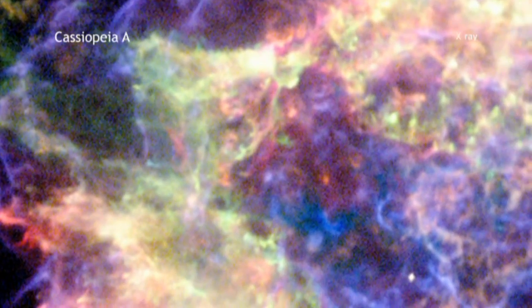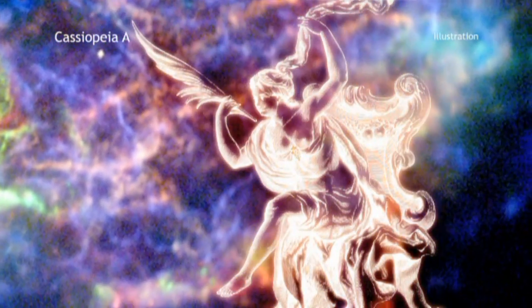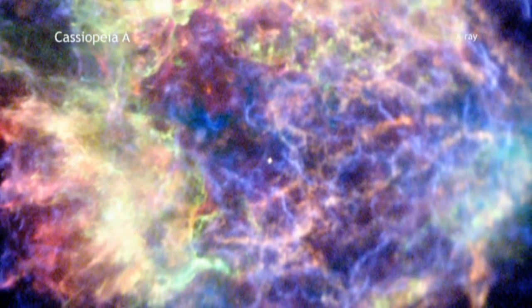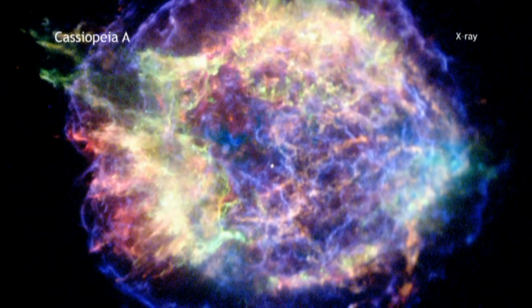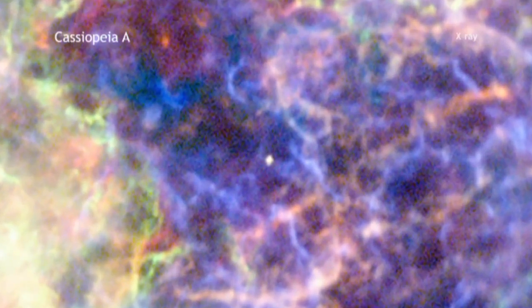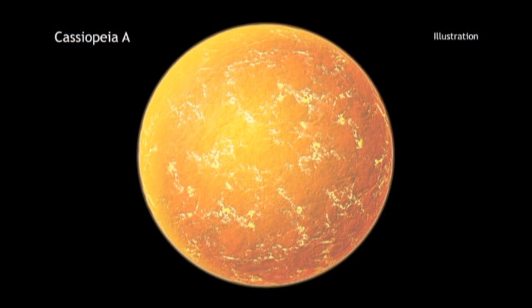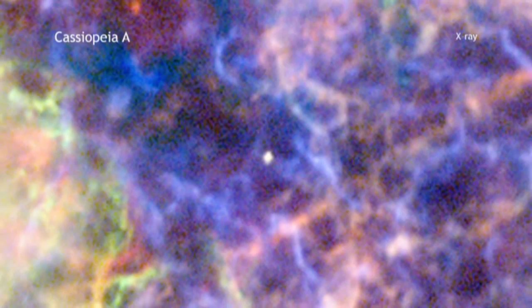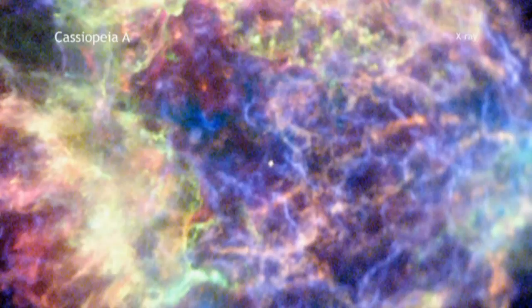Cassiopeia A is a supernova remnant found embedded in the constellation that bears its name, known as the Queen in Greek mythology. Along with virtually all modern telescopes, the Chandra X-ray Observatory has devoted a great deal of time to examine this aftermath of an exploded star. The latest results from Chandra reveal new details about the neutron star, which is the ultra-dense core of the star that exploded. For the first time, astronomers have determined that this stellar nub has an incredibly thin atmosphere of carbon on its surface. This is an important clue in deducing the true nature of this mysterious source, which lies at the center of one of astronomy's most famous objects.